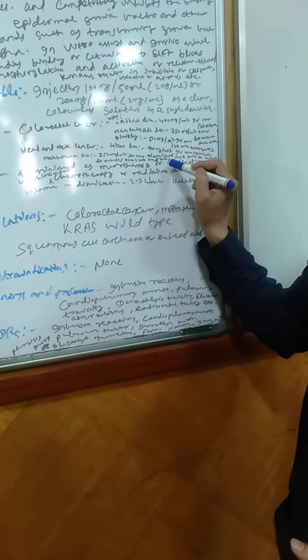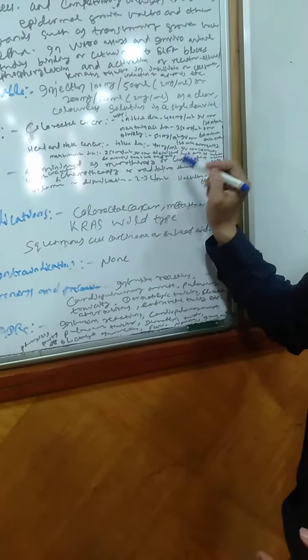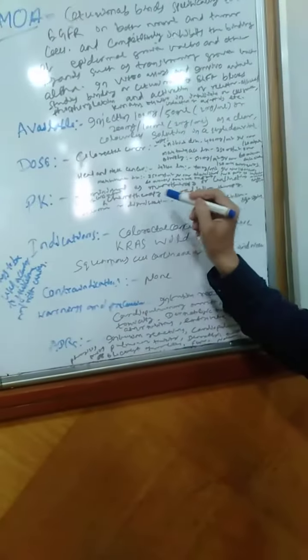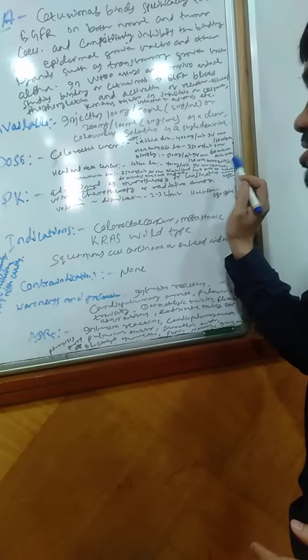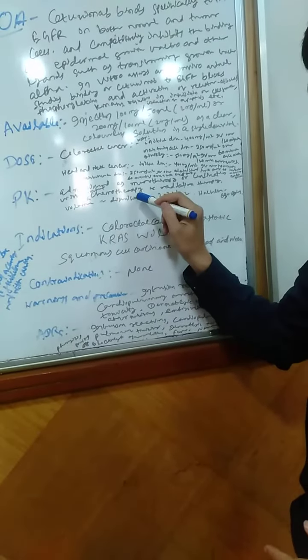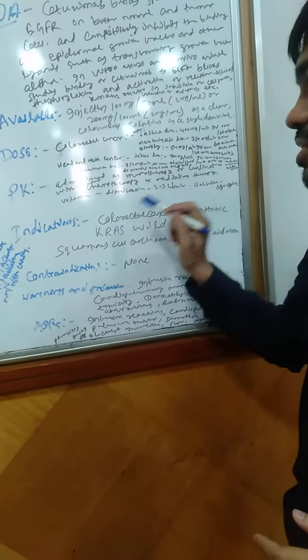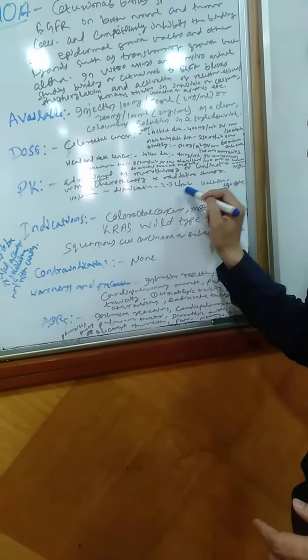Coming to the pharmacology, it is administered as monotherapy or in combination with concomitant chemotherapy or radiation therapy, and its volume of distribution is 2 to 3 liters per meter square, and its half-life is 63 to 230 hours.